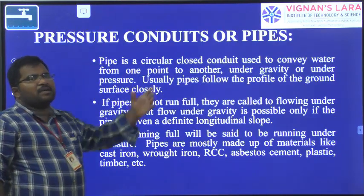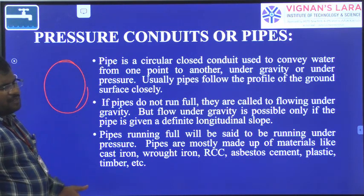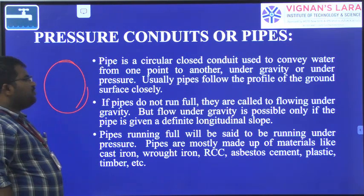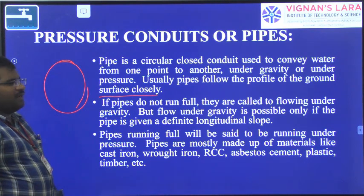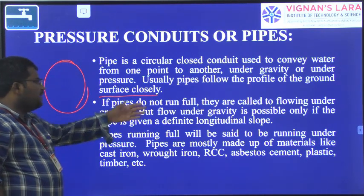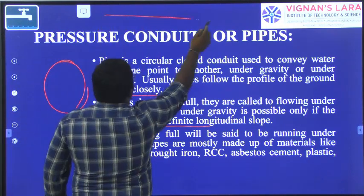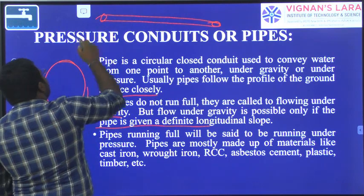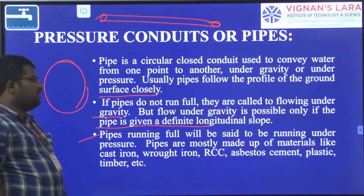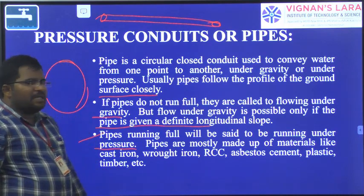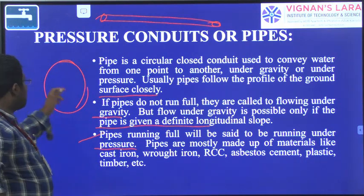Pressure conduits are simply called pipes. A pipe is a circular closed conduit used to convey water from one point to another, under gravity or with pressure. Pipe flow follows the profile of the ground surface very closely. If pipes do not run full, they are called flowing under gravity, but free flow under gravity is only possible if the pipe is laid on a slope from higher to lower elevation. If it is in reverse, you have to pump the water. Pipes running full are said to be running under pressure. Pipes are mostly made up of metals like cast iron, wrought iron, RCC, asbestos cement, plastic, and timber.